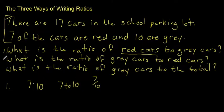Let's look at question number two now. What is the ratio of gray cars to red cars? We already know there are ten gray cars, so that means I have to mention that first in my ratio. It's going to be ten to seven. So again, I can write it as ten to seven, or I can write it as ten to seven.